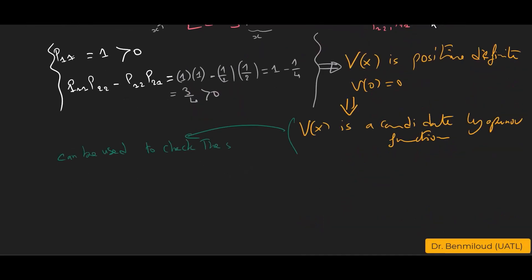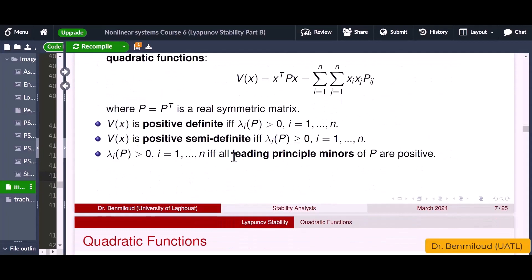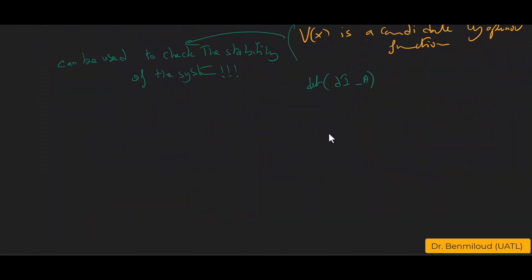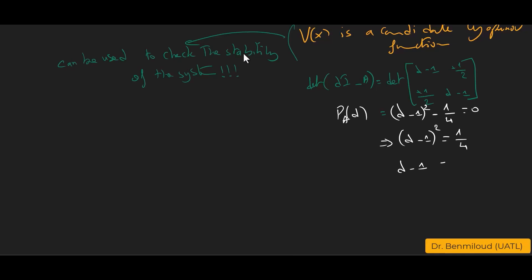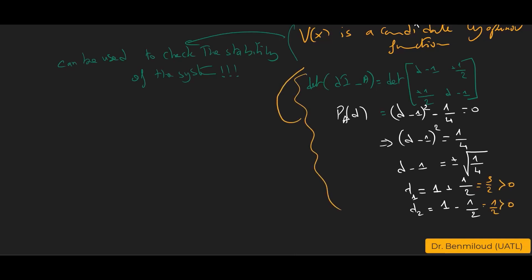The second method to prove positive definiteness is to check all eigenvalues of P are strictly positive. Computing the characteristic polynomial: det(λI - P) = (λ-1)² - ¼. Solving pₐ(λ) = 0 yields λ₁ = 3/2 and λ₂ = 1/2, both strictly greater than 0. Hence v(x) is a candidate Lyapunov function.